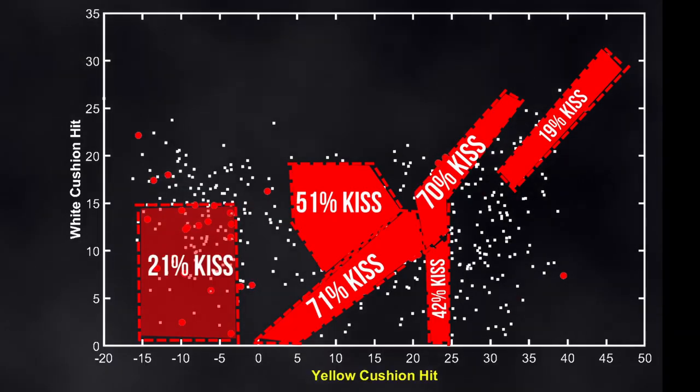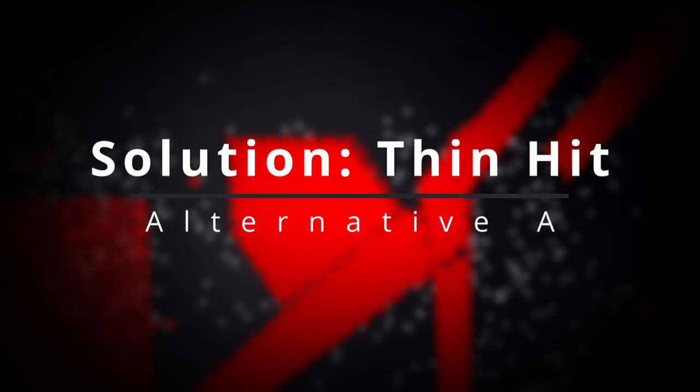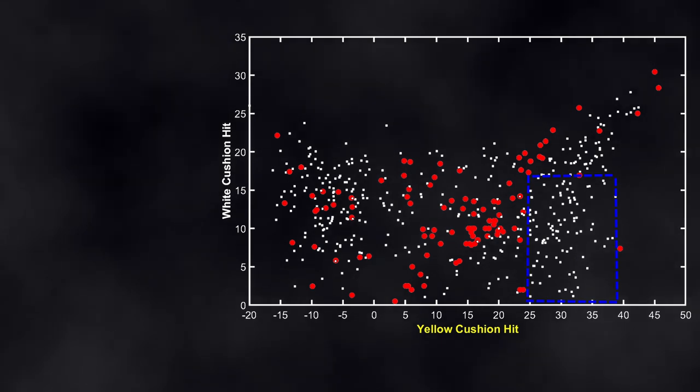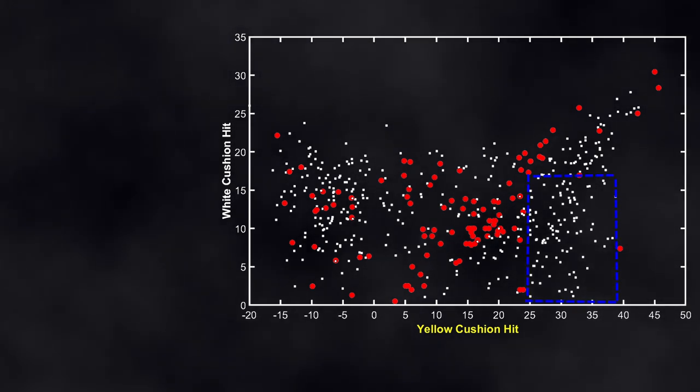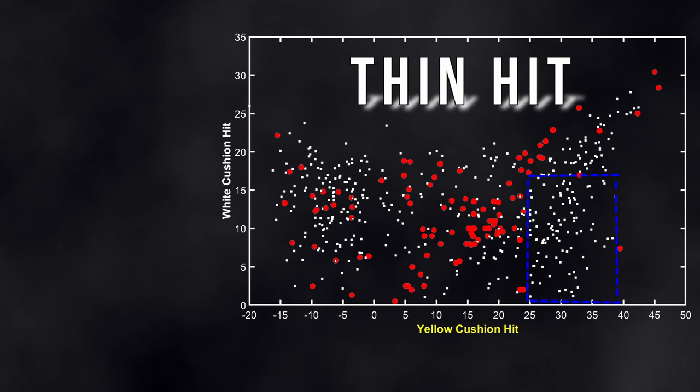So how should we play now? I see a very large area with a thin hit that has absolutely no kiss risk. Also due to the slow yellow ball there's a good follow-up position.